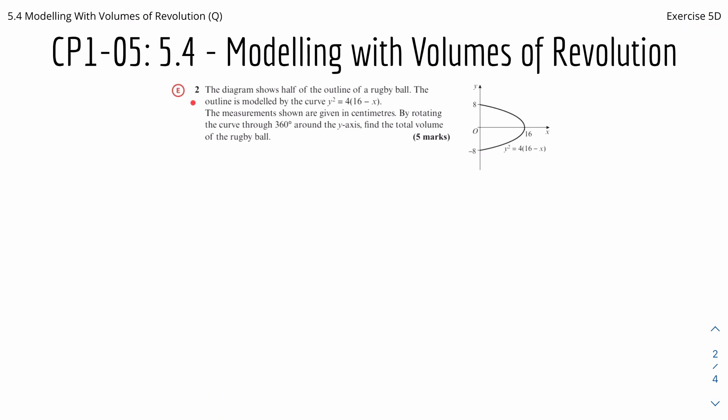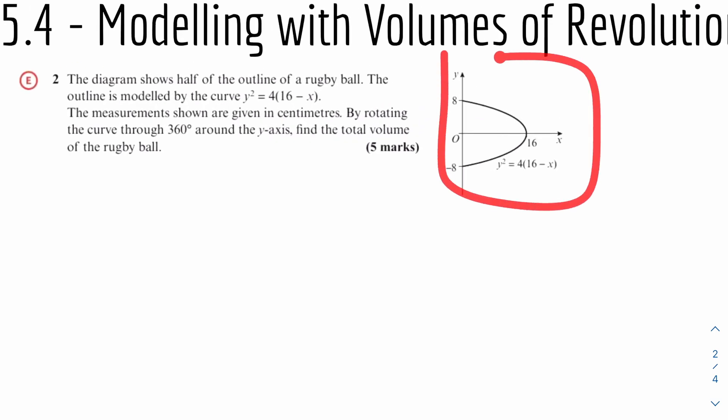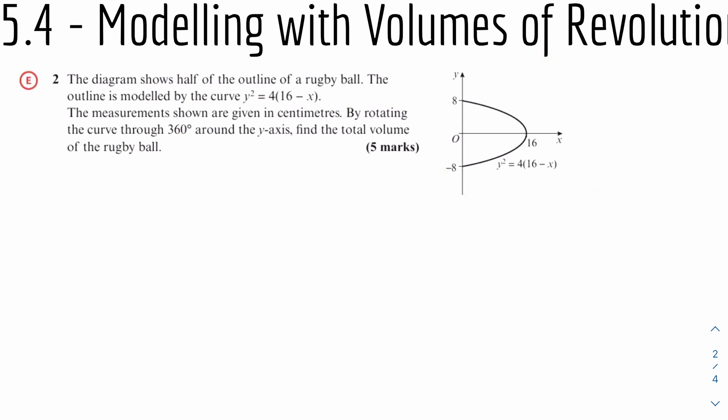Here's question 2, or the first question. The diagram shows half of the outline of a rugby ball. The outline is modeled by the curve y squared equals 4 times 16 minus x. The measurements as shown are given in centimeters. By rotating the curve through 360 degrees around the y-axis, find the total volume of the rugby ball.